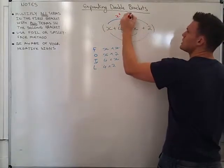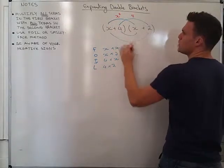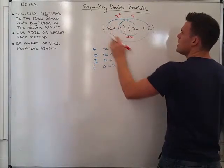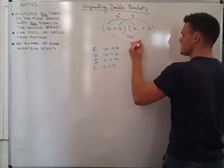4 times 2, that's going to give me 8. And I do 4 times x, which gives me 4x. And x times 2, which gives me 2x.